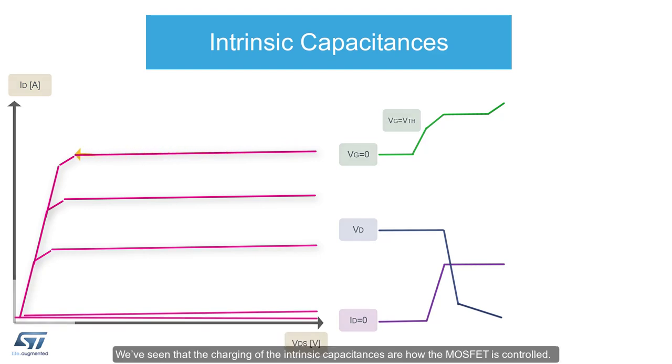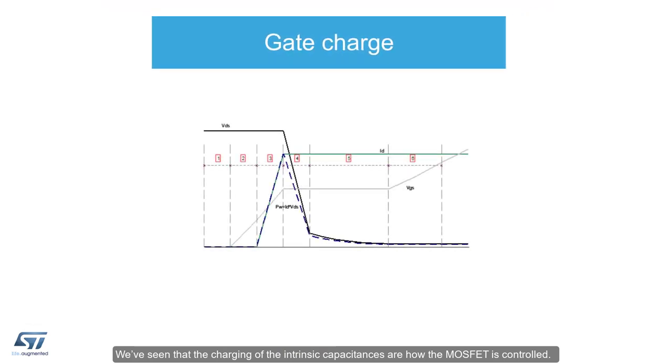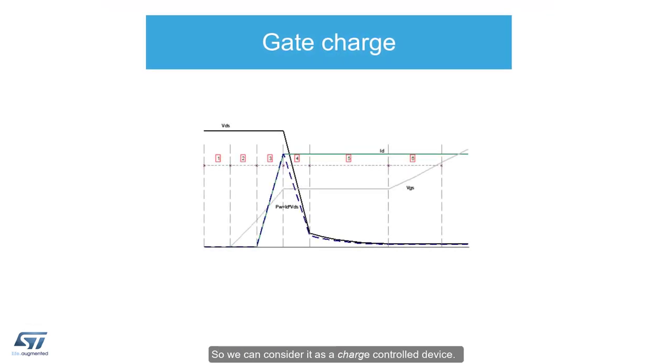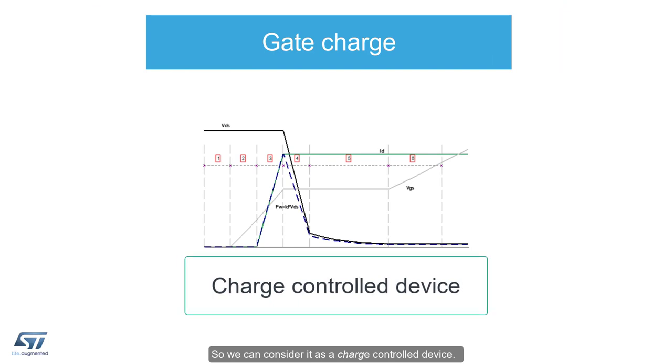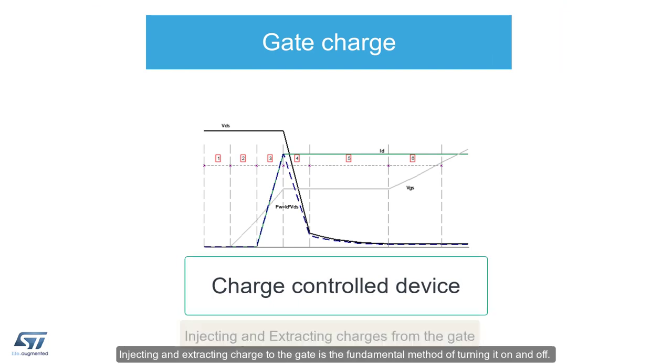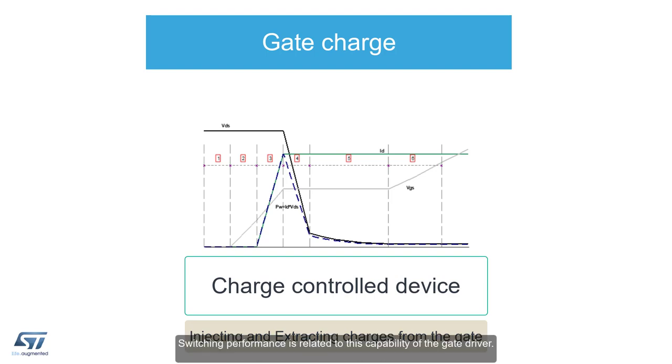We've seen that the charging of the intrinsic capacitances are how the MOSFET is controlled, so we can consider it as a charge controlled device. Injecting and extracting charge to the gate is the fundamental method of turning it on and off. Switching performance is related to this capability of the gate driver.